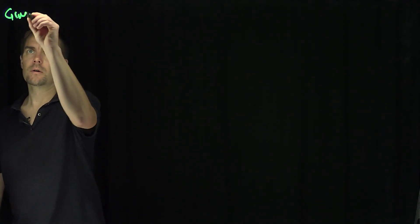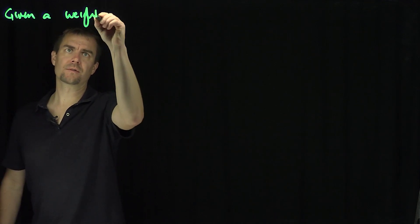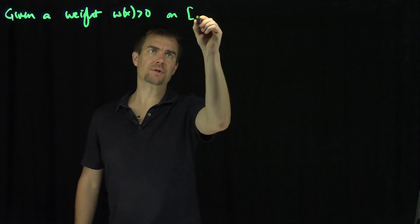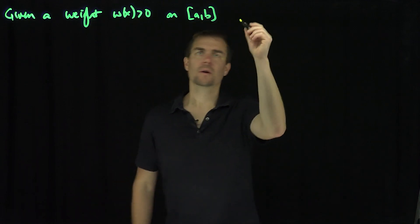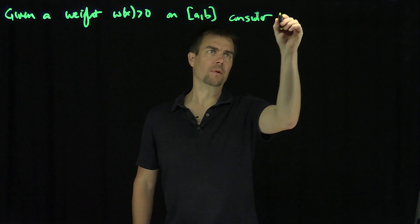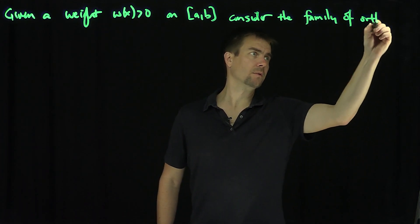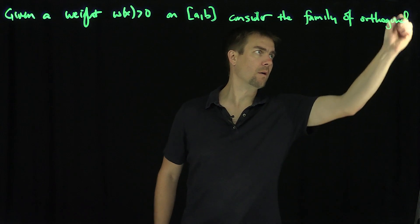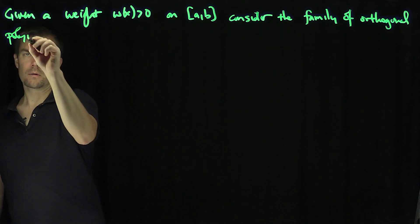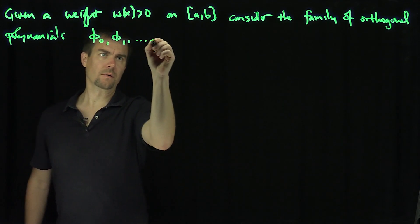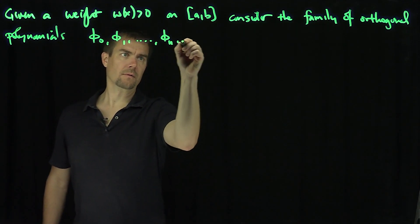Hello students. In this video, we'll discuss recursion relationships for orthogonal polynomials. So given a non-negative weight w of x on an interval a, b — and of course this interval can be infinite if we wish — consider the family of orthogonal polynomials φ₀, φ₁, φₙ, and so on.